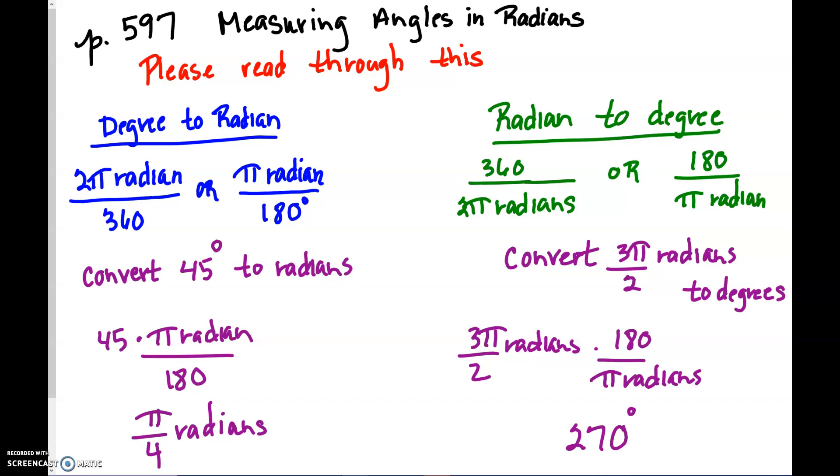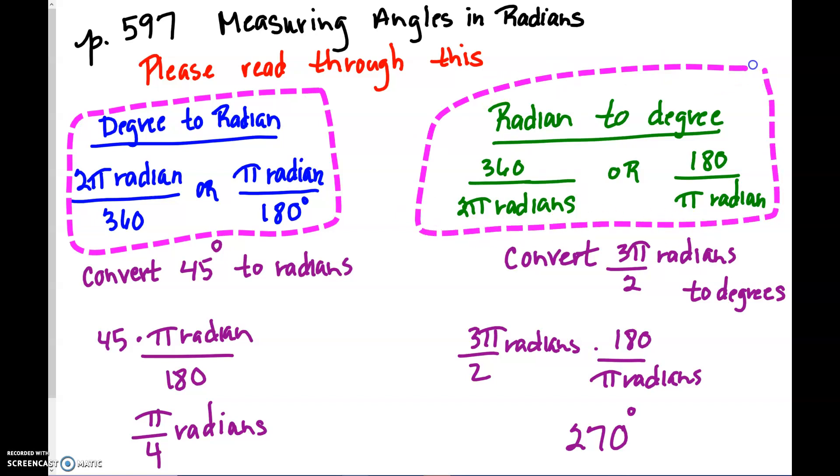So in here, it talks about the radians, and it shows where this all came from. So the first thing I just want to talk about is we have two formulas in here to look at. One goes from degrees to radians, and another formula goes from radians to degrees. So I just picked two problems underneath. These are also in your book.